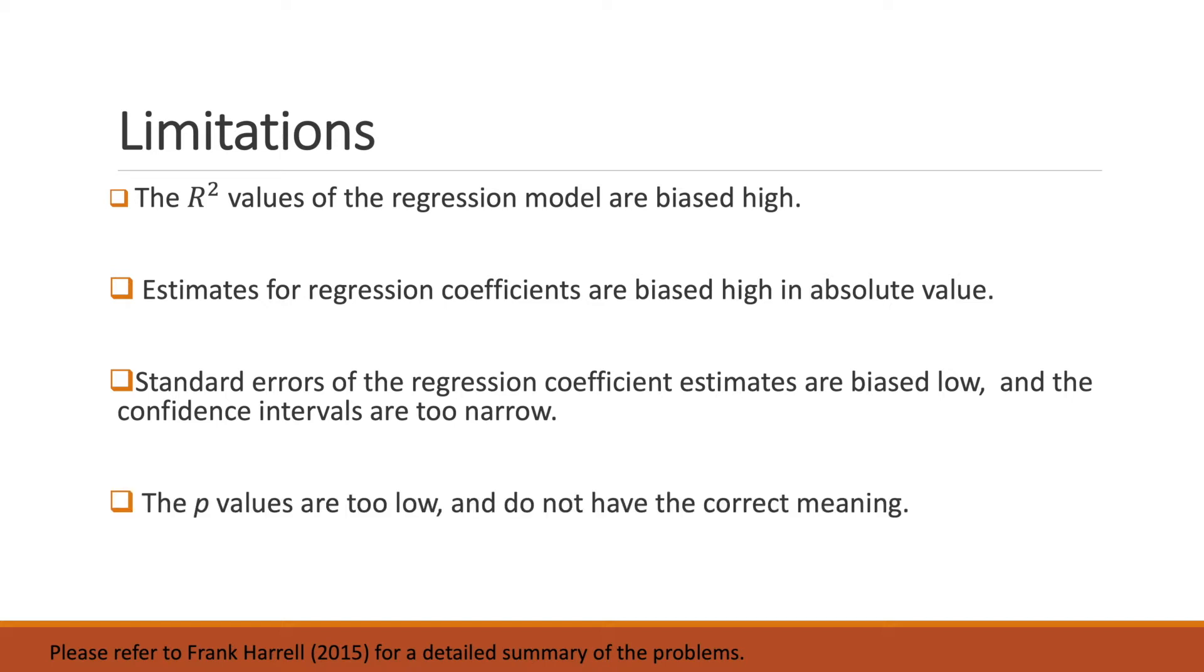After stepwise regression, the p-values for variables left in the model do not have the correct meaning. P-values represent the probability of finding a test statistic at least as extreme as the one you have, given the null hypothesis is true. However, after stepwise selection, the p-values of the variables left in the model are misleading. The p-values are typically much smaller than they would be if we had fitted a single model, and they are biased too low.